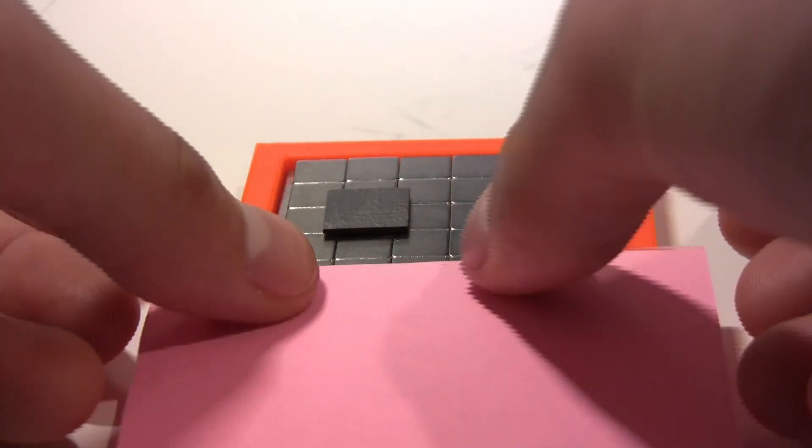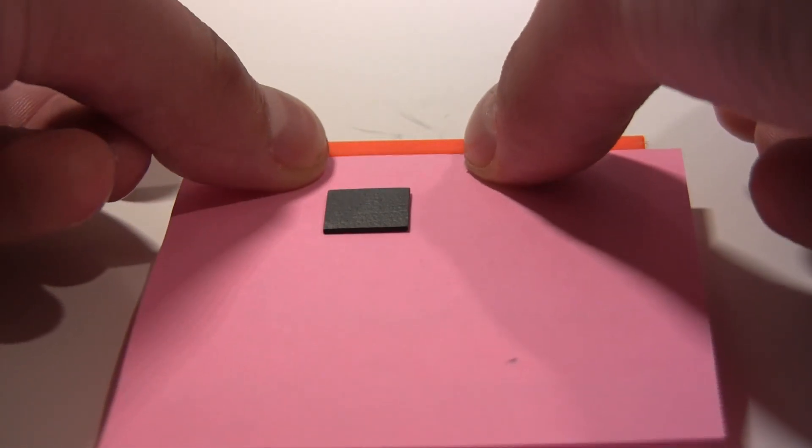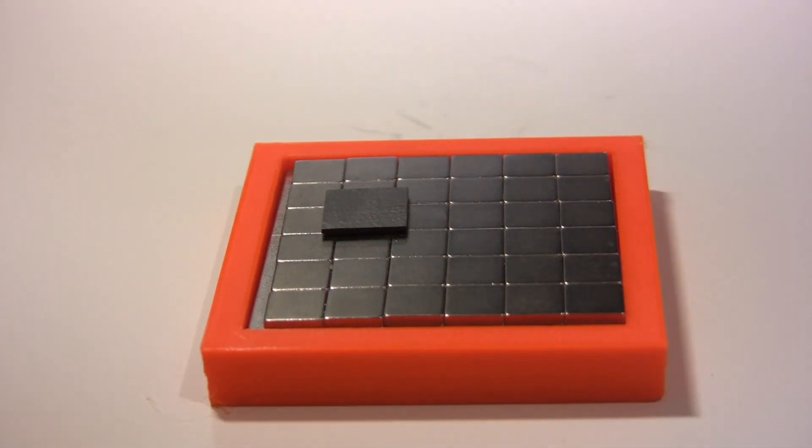Here we've got an array of neodymium magnets, and floating on top is a small piece of pyrolytic carbon. You can see that it's definitely levitating—I can get a sheet of paper clearly underneath.